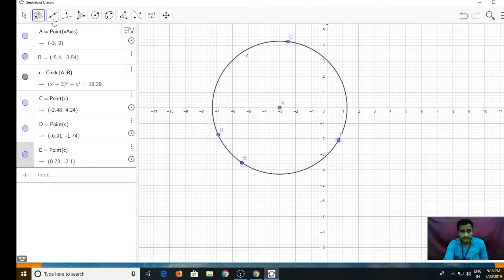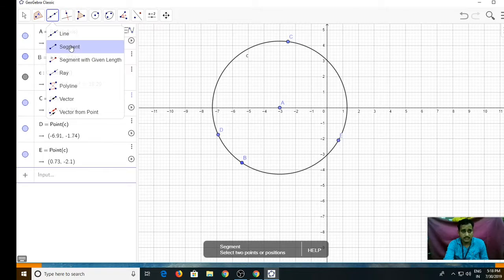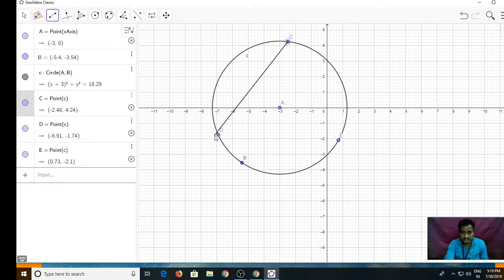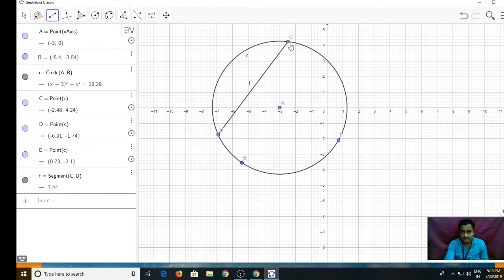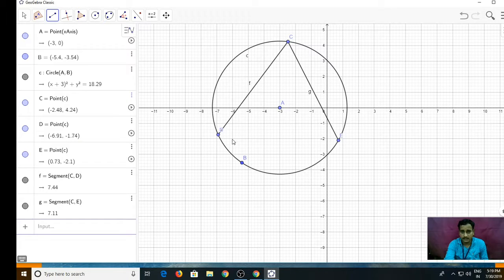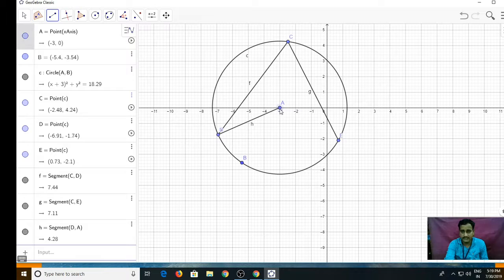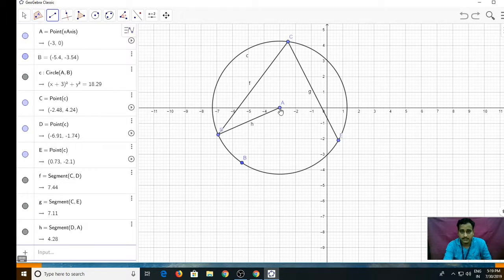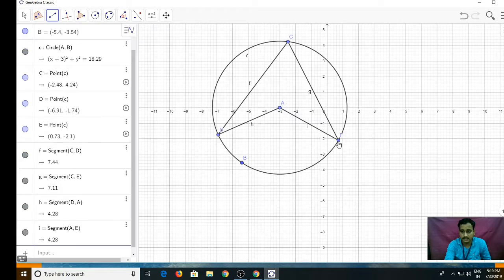Now, with the help of segment tool, I can join all these segments. Say segment DC, segment DA, then segment DA, and finally segment AE like this.